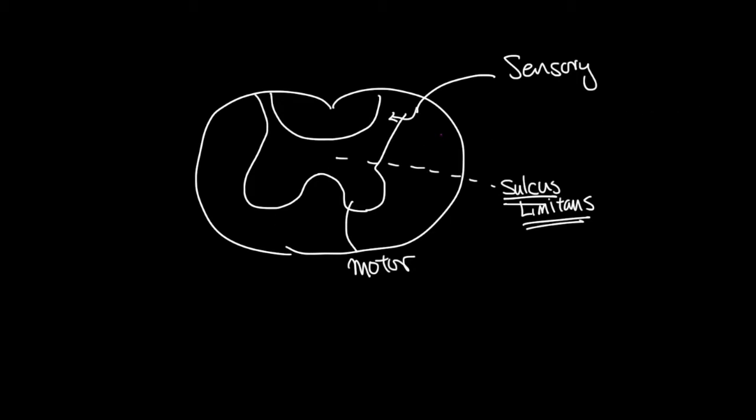So first off, we're going to start off with this particular component called General Somatic Efferent. So GSE. What GSE is, it's basically just motor fibers. Efferent meaning that it goes from the spinal cord outside, and somatic meaning that it's muscle. So the GSE is located here.